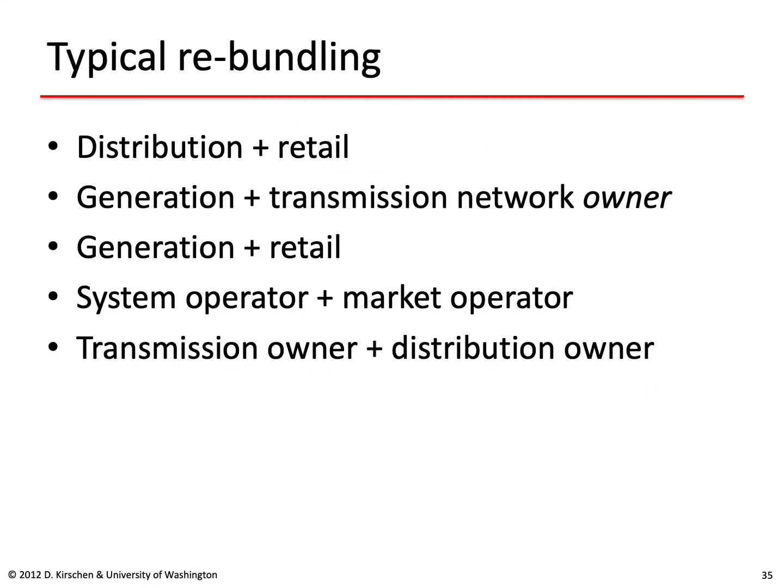These functions can be done by the same organization, so there can be some rebundling. Often a distribution company will also have a retail arm, or a generation company may also be a transmission network owner — though it will typically not be allowed to be the transmission network operator, as that might give it an unfair advantage in a wholesale market. A generator can also be a retailer, generating electricity, selling it on the wholesale market, and buying on the wholesale market to sell at retail. The system operator very often also takes on the function of market operator. And companies that own transmission will very often also own distribution networks.